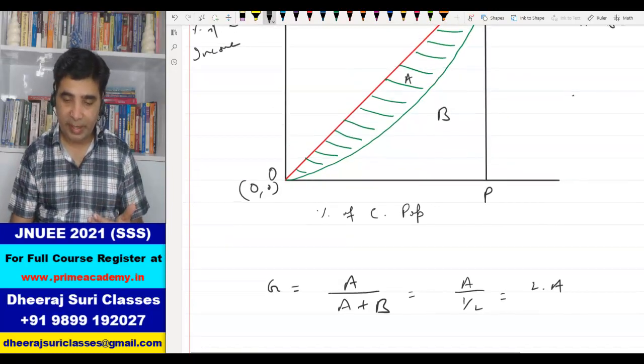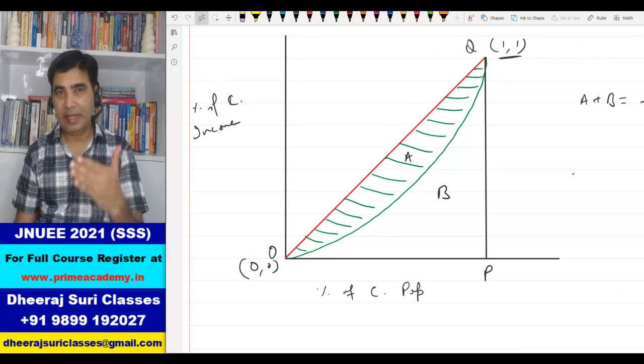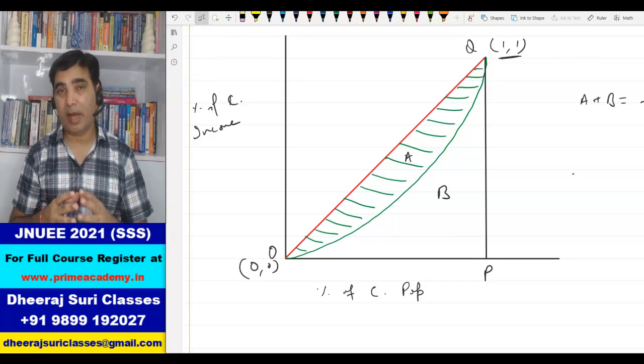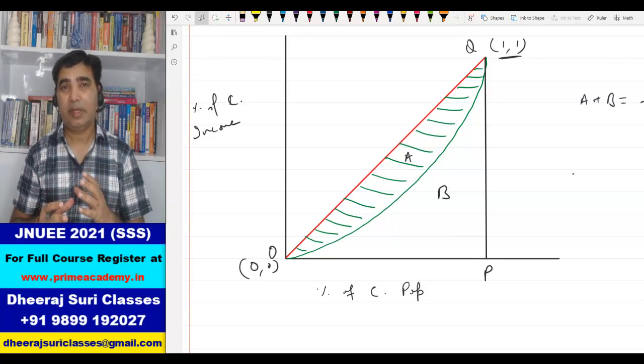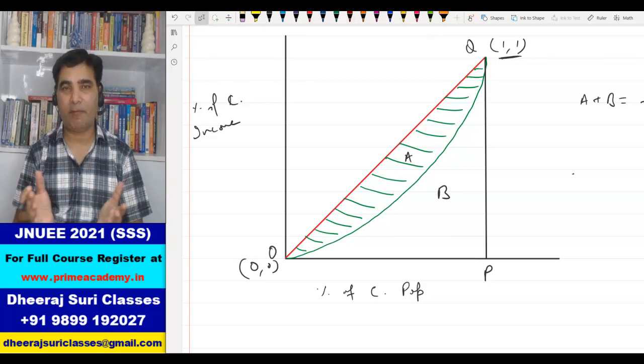Now the question comes, how do you find the area of A? A is the region between this red line and the green curve. How do you find area between two curves? Integration of upper curve minus integration of lower curve. This is how we find.